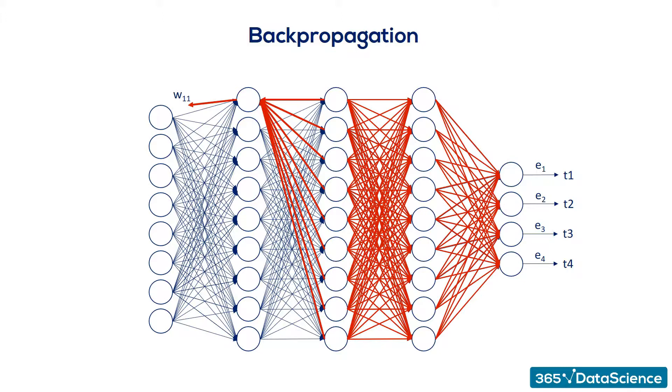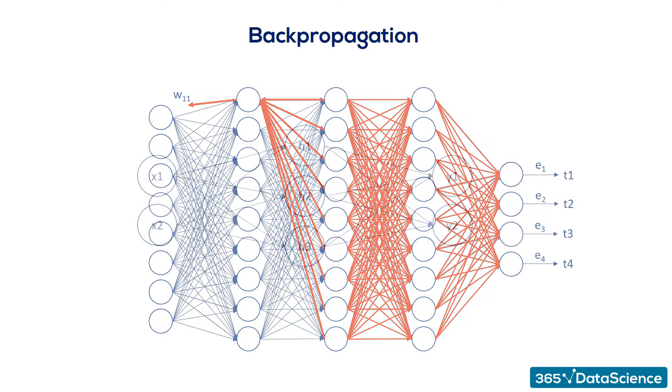Let's look at the schematic illustration of backpropagation shown here. Our net is quite simple. It has a single hidden layer. Each node is labeled, so we have inputs X1 and X2, hidden layer units, output layer units Y1 and Y2, and finally, the targets T1 and T2.